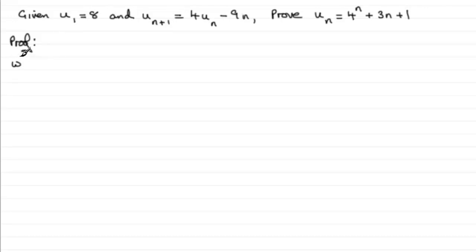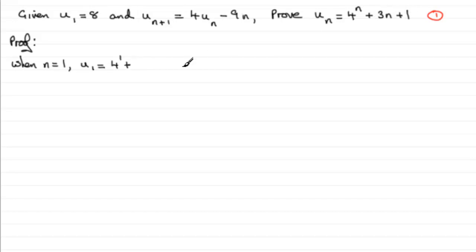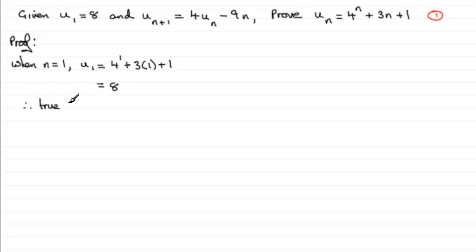We start with the base case n=1. Substituting n=1 into the formula gives u1 = 4^1 + 3(1) + 1. That's 4 + 3 + 1 = 8, which agrees with the given first term. Therefore the formula is true for n=1.